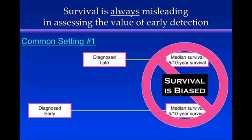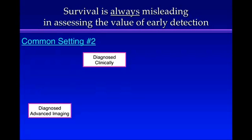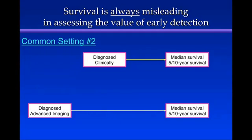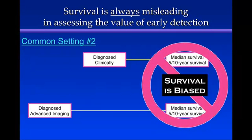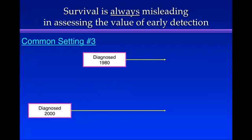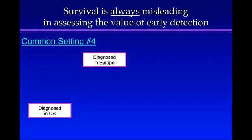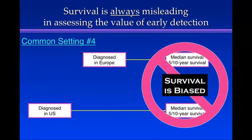Epidemiologists would say survival is biased — that's what biased means. A second setting: comparing patients diagnosed clinically because they have symptoms with those diagnosed with advanced imaging — things like CAT scans and MRIs — before they have symptoms, and making that comparison by measuring survival. Survival will be biased. Or comparing patients diagnosed in the past — 1980, for example — with those diagnosed more recently, in 2000, where there are just a lot more tests available: more CTs, more MRIs, more earlier diagnosis. You compare survival of those two groups — of course it's biased. And finally, international comparisons: comparing patients diagnosed in Europe with those diagnosed in the United States, where there's so much more advanced diagnostic technology and detection before symptoms.